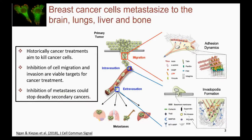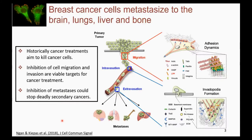Breast cancer tends to metastasize to the brain, lungs, liver, and bone. This process has a number of steps: cells invade the basement membrane, travel through tissue, intravasate into the bloodstream, travel through the body, extravasate out, and migrate to different organs to metastasize. Historically, cancer treatments have aimed to kill cancer cells, but if we can inhibit cell migration and invasion we have viable targets for new therapeutics. We really want to find ways to inhibit metastasis by understanding the molecular mechanisms regulating these steps.